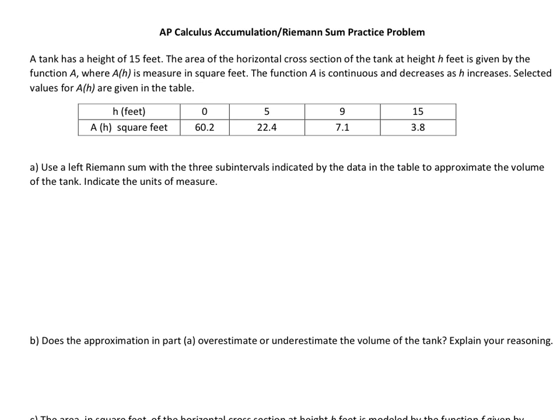So a tank has a height of 15 feet. The area of the horizontal cross-section of the tank at height h feet is given by the function A, where A of h is measured in square feet. The function A is continuous and decreases as h increases. Selected values for A of h are given in the table. So we've got this table, and the first thing that I want to point out that's pretty important for us to understand is that it says right here it's continuous and decreases. So the function is going down and it's continuous. So these are just selected values that we've been given. There are values in between. It's continuous. It does not stop.